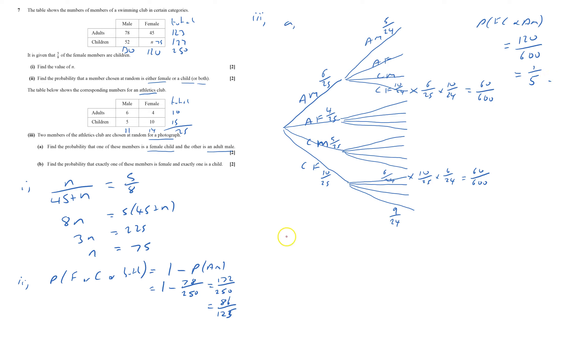And now I'm doing part B, which is the probability of exactly one of these as a female and exactly one as a child. So one female and one child. And again my tree diagram will probably help that. We could have the adult male and a female child, or we could have adult female, in which case the other one is going to have to be a child male, that's the third one down.